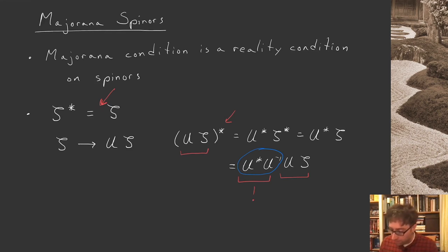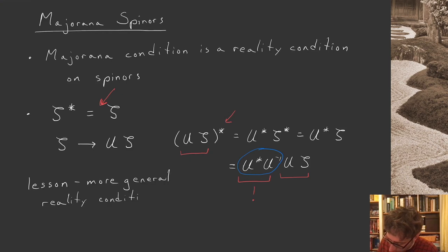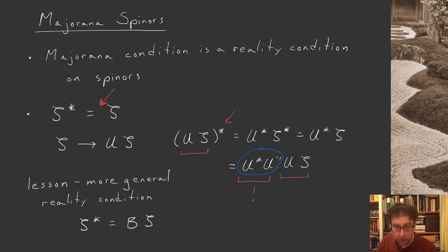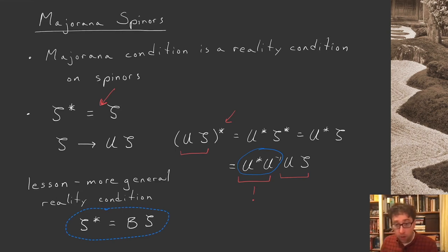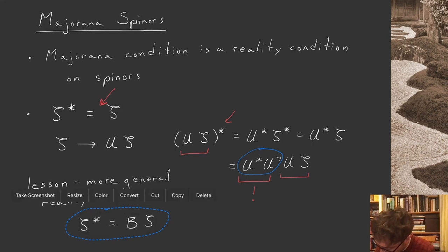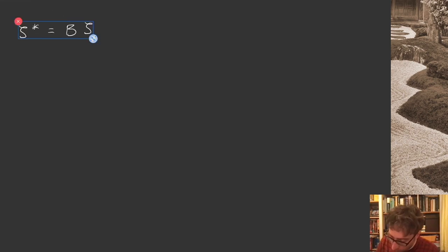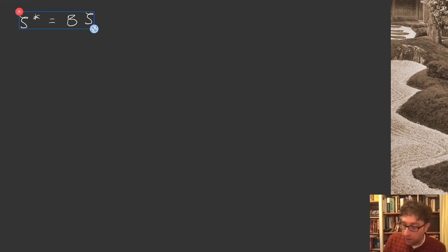The lesson is that we should allow for a more general reality condition. When we take the complex conjugate of a spinor, we ought to allow that it equals some matrix B times the original spinor, not just the original spinor itself — we allow for this extra matrix degree of freedom. With this as our definition of a reality condition, or a Majorana condition, let's now search for consistency conditions on this matrix B and on what's entailed in imposing such a reality condition.